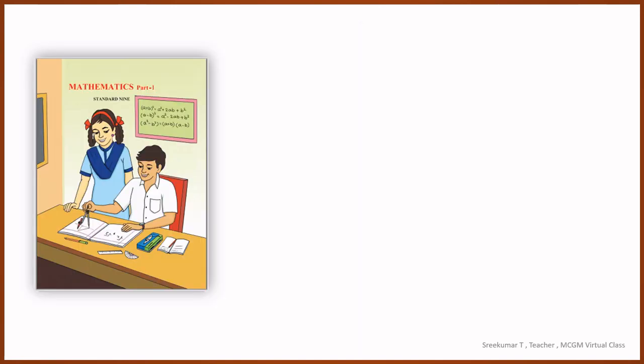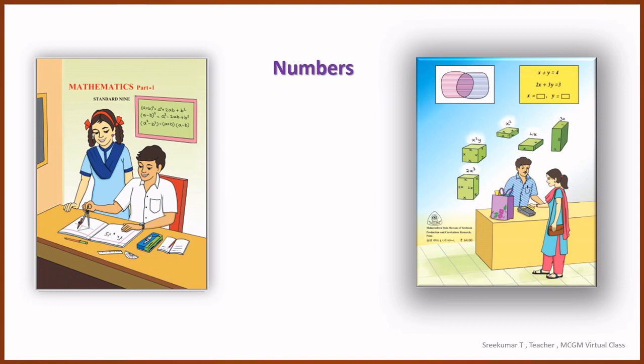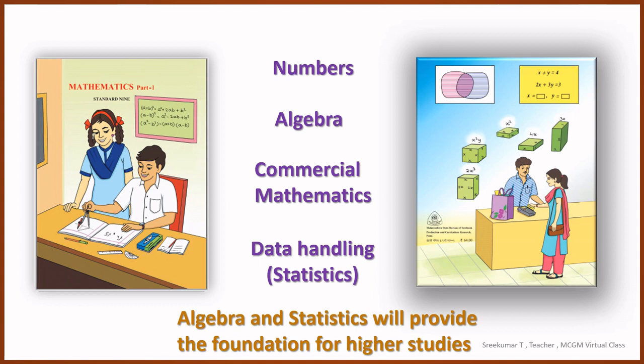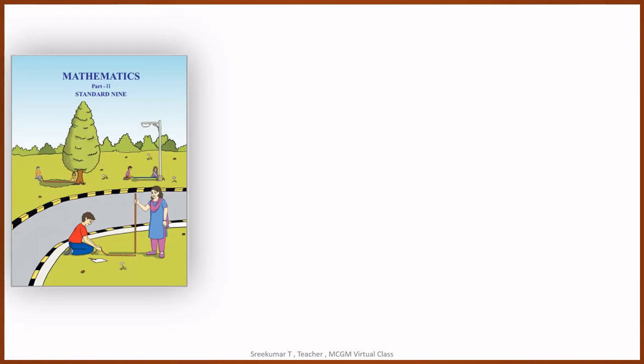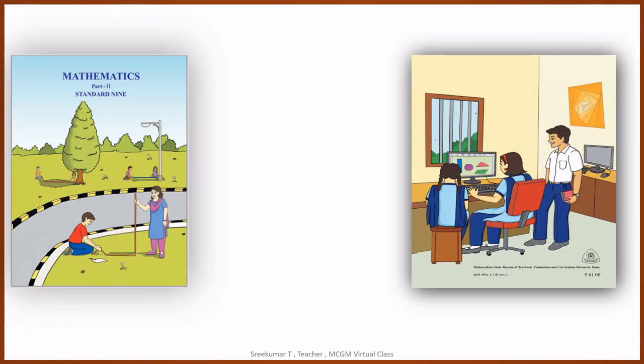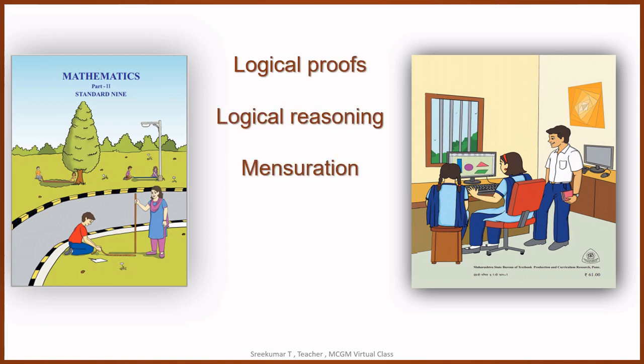Part one of your textbook is mainly dealing with numbers, algebra, commercial mathematics, data handling, that is statistics. Algebra and statistics will provide the foundation for higher stats. On the other hand, Maths Part 2 is mainly dealing with logical proofs, logical reasoning.